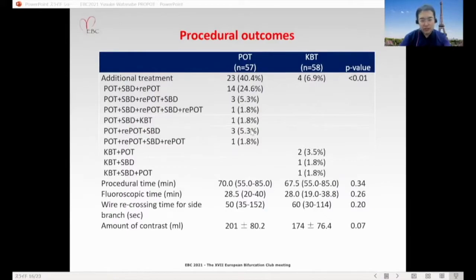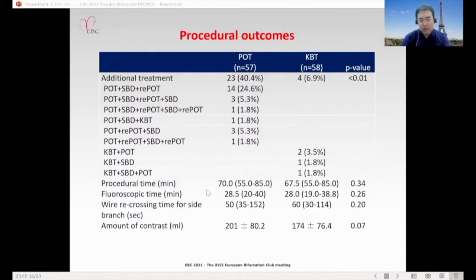Procedure outcomes: stent diameter was 2.9mm in both groups. POT balloon size was 3.4mm in the POT group. In the KBT group, main vessel balloon size was 2.9mm and side branch balloon size was 2.3mm. Additional treatment was performed in 40% in the POT group versus 6.9% in the KBT group — a significant difference. In the POT group, additional treatment was mainly re-POT sequences. Procedural time, fluoroscopic time, wire recrossing time, and contrast amount were not significantly different between the two groups.